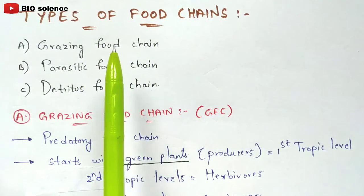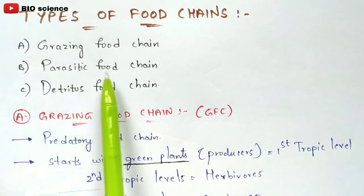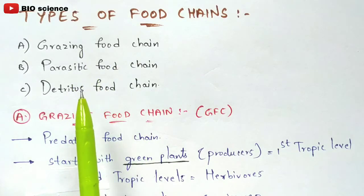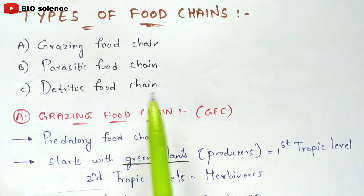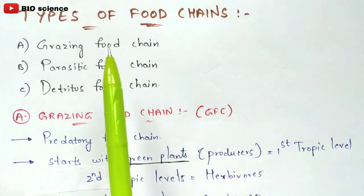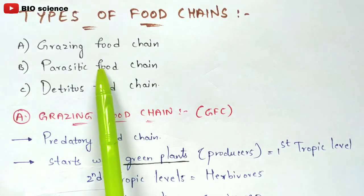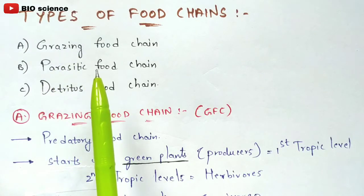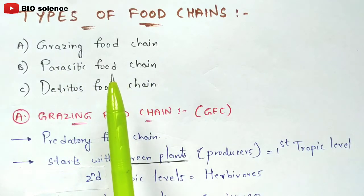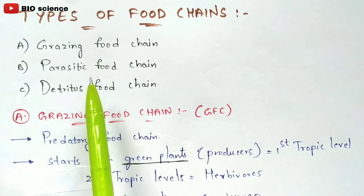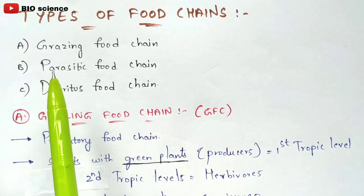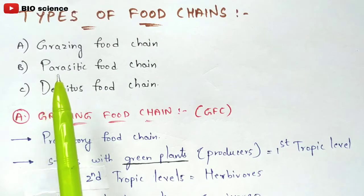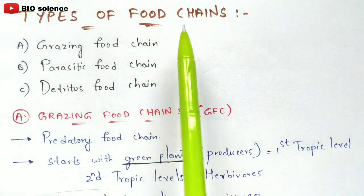Now let us discuss the types of food chains. There are three types: grazing food chain, parasitic food chain, and detritus food chain. These three food chains are classified based upon the type of producers. Each and every type of food chain will start with producers and end with carnivores — that applies to all. But the type of producer involved in each food chain is different, and based on that differentiation, this classification is done.